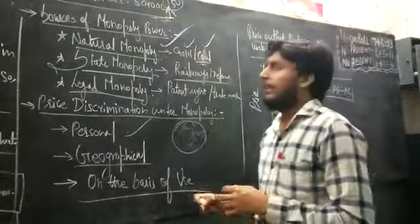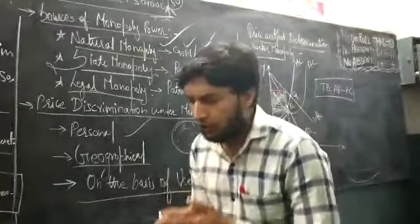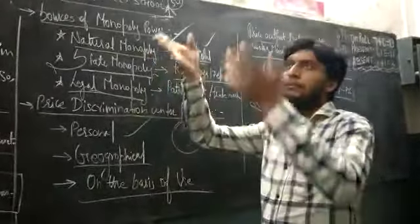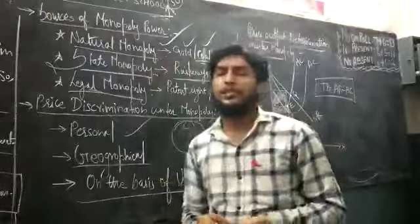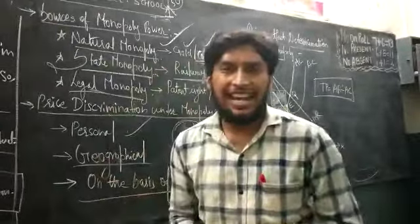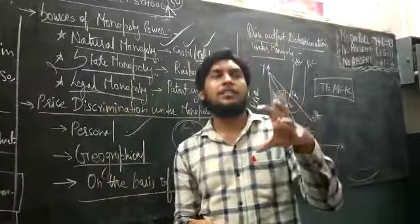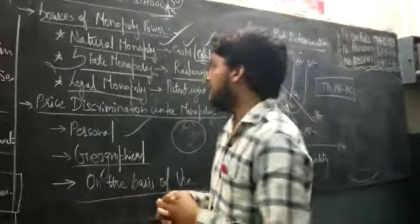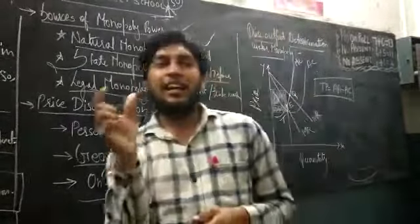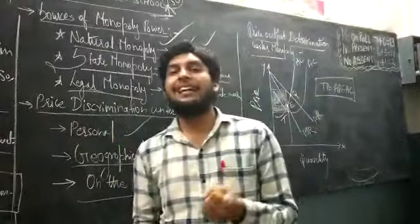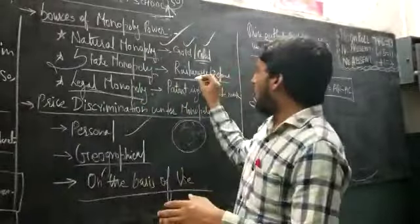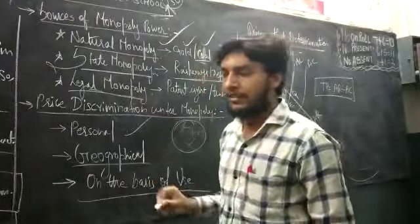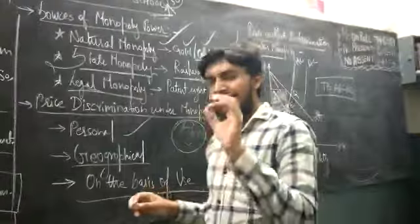Then there is a state monopoly. Natural monopolies are those which are given by the creator of the world, that by nature. State monopoly means certain powers that they have. For example, the central government has the power to control the railways, defense and other few industries. No one can come and interfere in this. Which means, the central government has the railways.